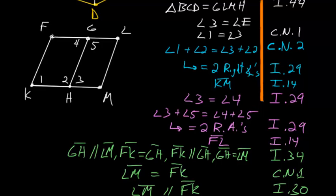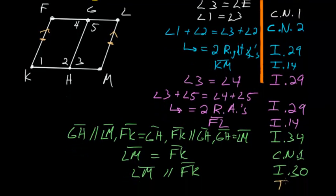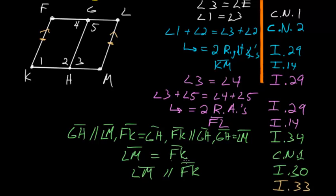So line FK is equal and parallel to line LM. By Book 1 Proposition 33, if two lines are equal and parallel, then lines connecting their endpoints — namely FL and KM — are also equal and parallel to each other. Therefore, KM is parallel to FL, and FLMK is a parallelogram.